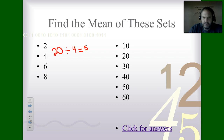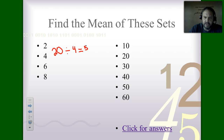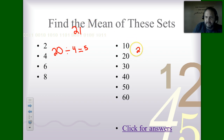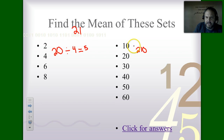Now let's look at the second data set: 10, 20, 30, 40, 50, 60. I'll add up the first digits — 1 plus 2 is 3, plus 3 is 6, plus 4 is 10, plus 5 is 15, plus 6 is 21 — then tack on a zero to get 210. I have to divide that by 6 because there are 6 numbers in this data set.